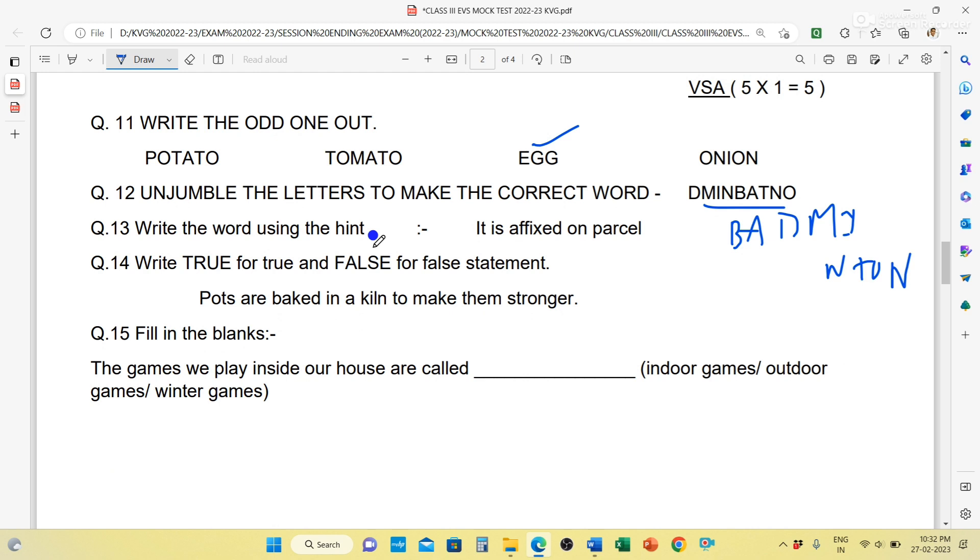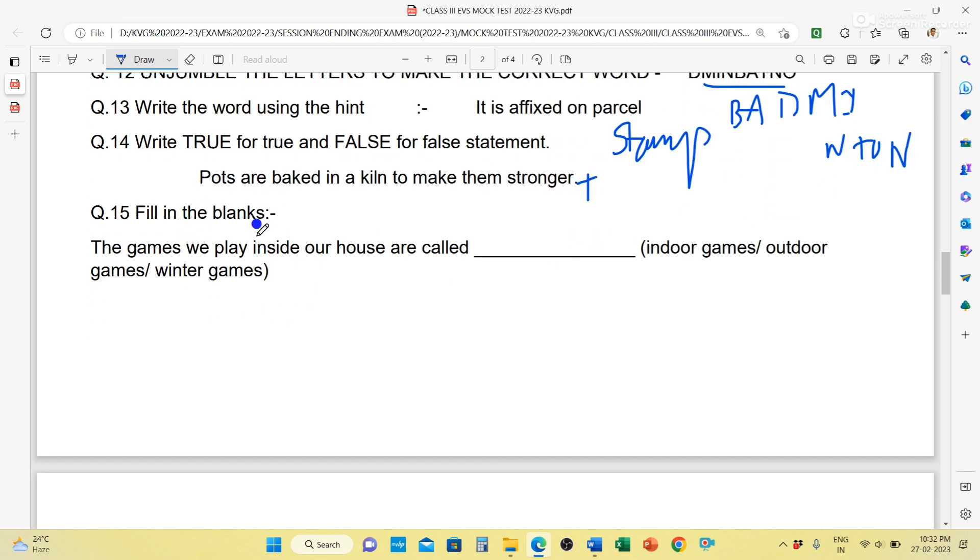Next, write the word using the hint. It is affixed on postal. You can think what it may be. It is your stamp. Stamp is affixed on postal. Write true for true and false for false statement. Sports are backward in a kiln to make them stronger. It's true. Next, fill in the blanks. The games we play inside our house are called indoor games.